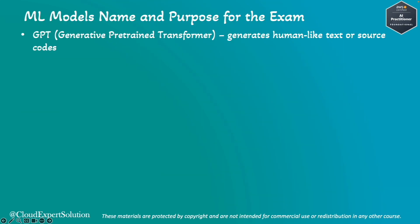In this slide, we will review the name and purpose of some more machine learning models that you may come across in the examination. You don't have to understand how these models work, but you should know what they are and their use cases at a high level. To start, GPT — Generative Pre-Trained Transformer — is the main driving model behind ChatGPT, and it can generate human-like text or source code.